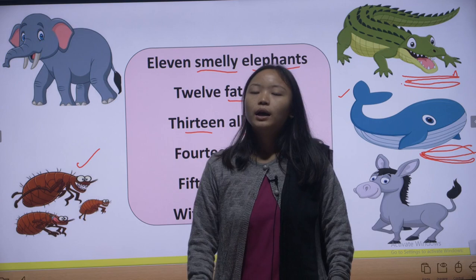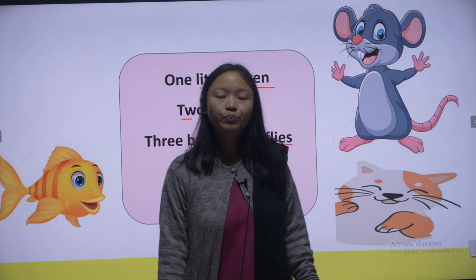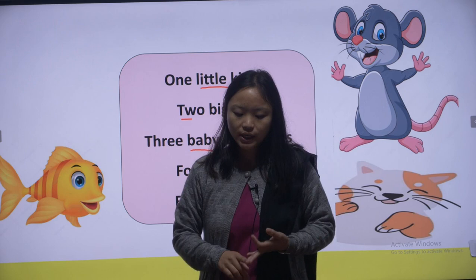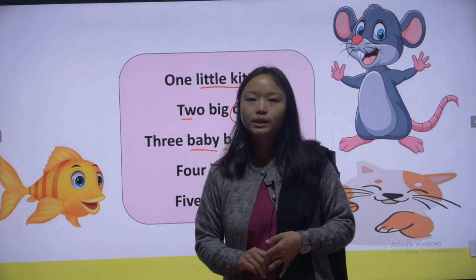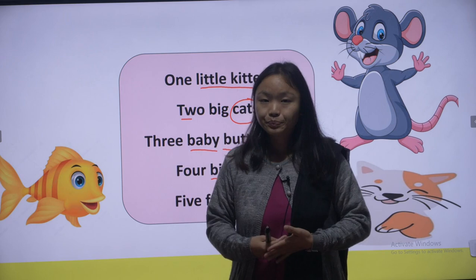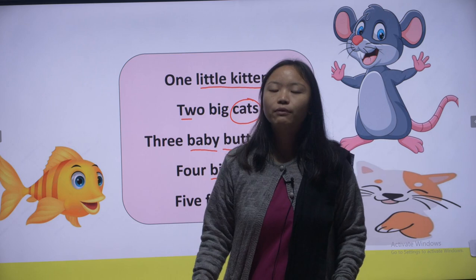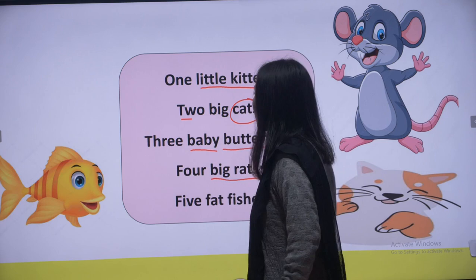In this poem there are many creatures — kitten, cats, butterfly, rats, fishes, seagulls, eels, elephants, lizards, bees, alligators, whales, donkeys. We have seen their pictures too. Today we have learned the names of fifteen creatures. Let's read the poem once again — students, keep your books open and read along with me.